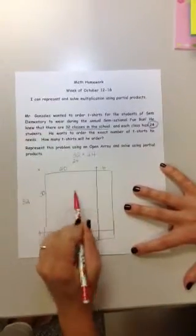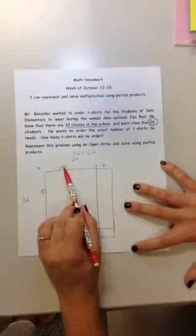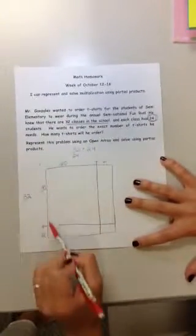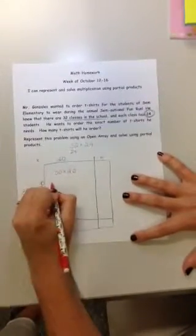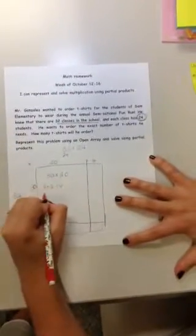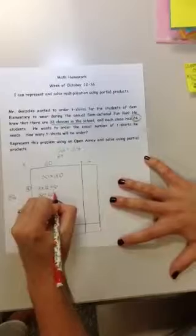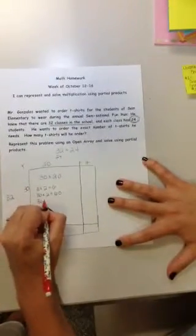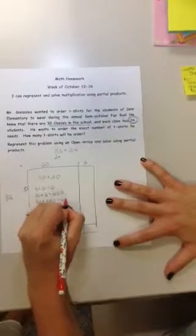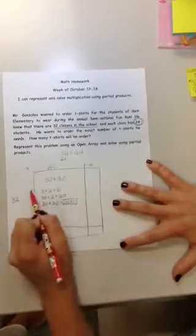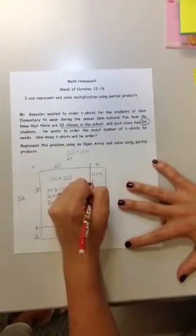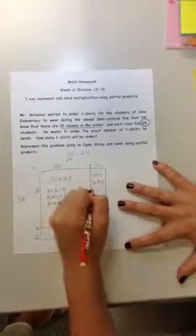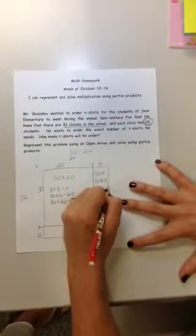So this big box right here, I'm going to start with that one. 30 is next to it and 20 is above it. So I know that this box is 30 units down and 20 units across, so this is 30 times 20. I know that 3 times 2 equals 6, so 30 times 2 will equal 60, and then I'm going to build up, 30 times 20, then is 600. That's my first partial product. Then the box next to it is 30 units down and 4 across, so that's 30 times 4. I know that 3 times 4 is 12, so 30 times 4 equals 120, my second partial product.